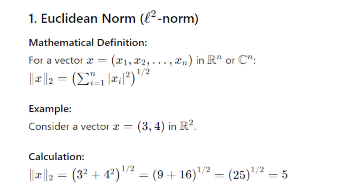Euclidean norm, or L2 norm — mathematical definition. For a vector x equals (x₁, x₂, ..., xₙ) in ℝⁿ or ℂⁿ, the L2 norm of x equals the square root of the sum from i equals 1 to n of the absolute value of xᵢ squared.